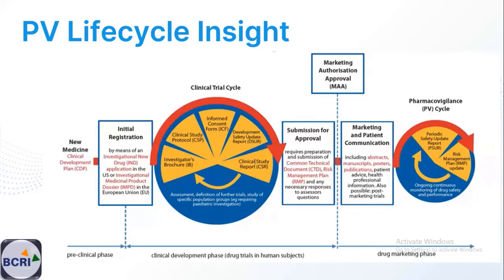Pharmacovigilance continues until the drug is in the market, and even after withdrawal, for three to five years depending on the country, we must continue pharmacovigilance. It is not a small project — it is an ongoing operation. The pharmacovigilance department will just keep running. The PV cycle: from the time the drug hits the human body until it is withdrawn from the market, we keep an eye on the drug.